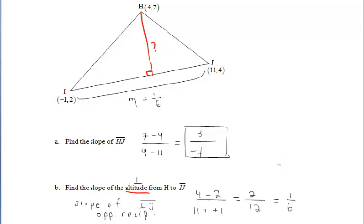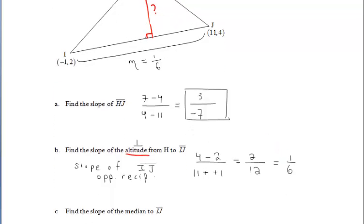And then, if we want to find the slope of our altitude, since it's perpendicular to that line, we take the opposite reciprocal. So the opposite reciprocal of positive one-sixth is negative six.